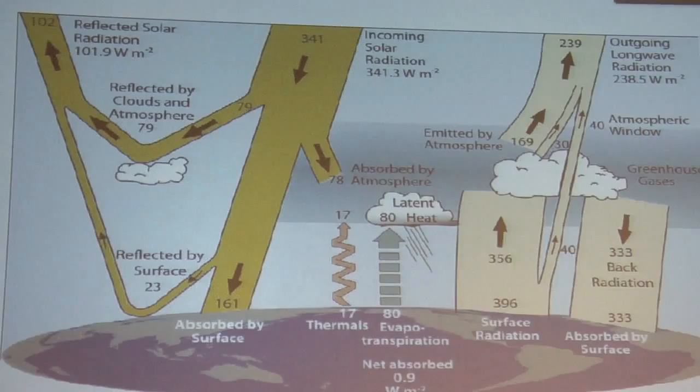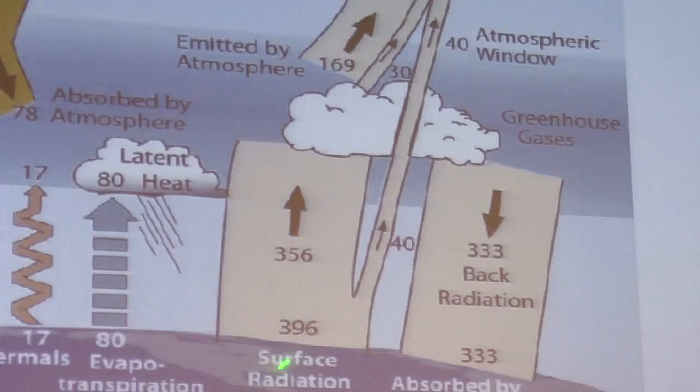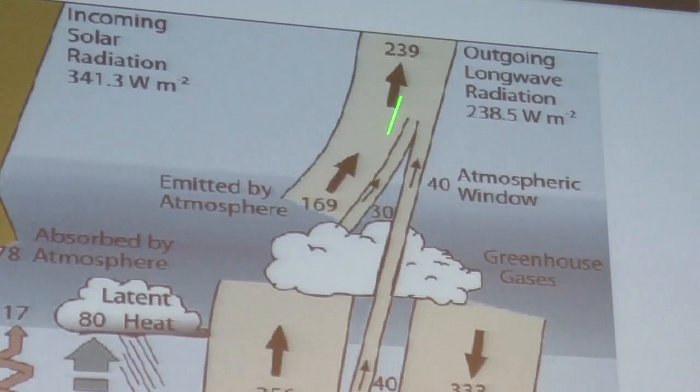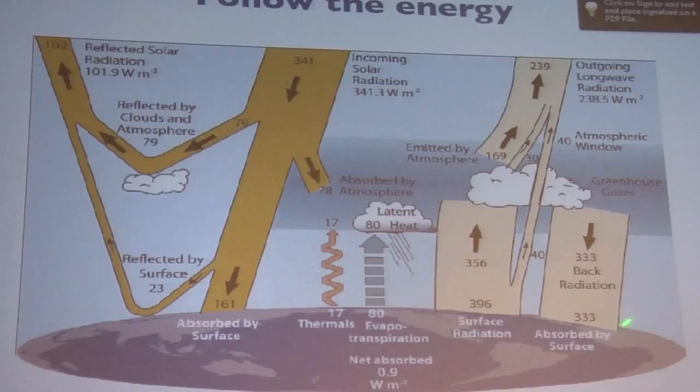And then over here, we have the infrared going back out. So, here we have 396, a big number, coming off the surface, trying to get back out to space, but it's partly blocked. Meanwhile, the atmosphere itself is emitting to space. And the number that makes it out the top is 239, a lot less than this. So, these photons that would love to get back out to space are not able to do so very efficiently. This ratio is about 0.6.